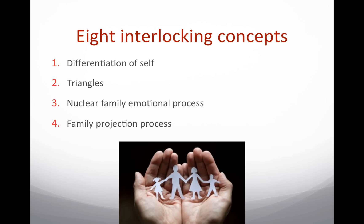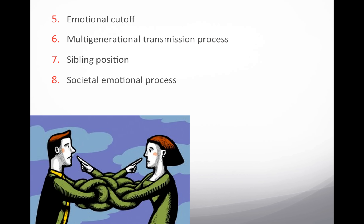The nuclear family emotional process refers to conflict, emotional distance, and over- and under-functioning reciprocity, which occurs when one member of a two-person dyad takes on the responsibilities for the relationship. The family projection process refers to the transmission of emotional problems from parent to child. When anxiety is focused on a child, the child develops problems according to the theory. Parents then focus on fixing the child or asking an expert to help change the child. But Bowen would say that parents need to manage their own anxiety and relationship issues, and then the child will automatically improve.